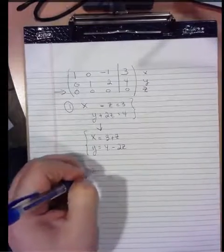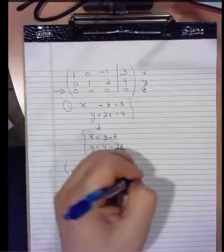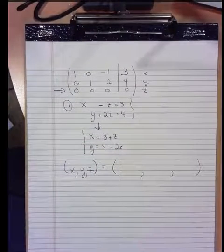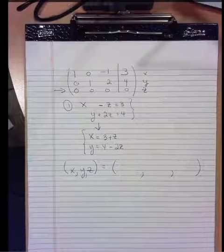And so in general, the solution set to this system, x, y, z, will look like, well, we'll decide what it looks like, right? We still have to provide the description of the solution set. Just saying infinitely many isn't enough information.